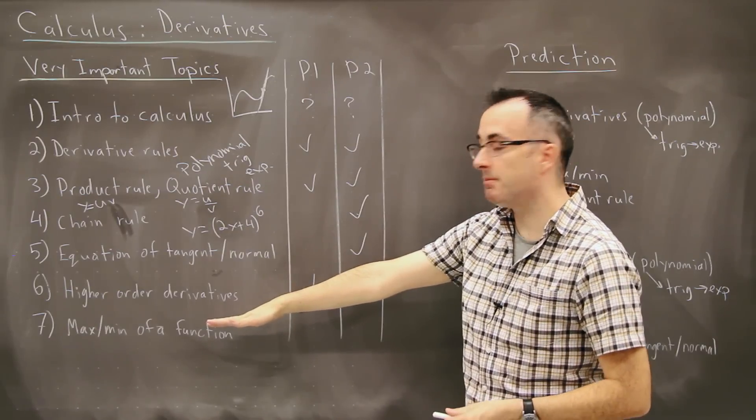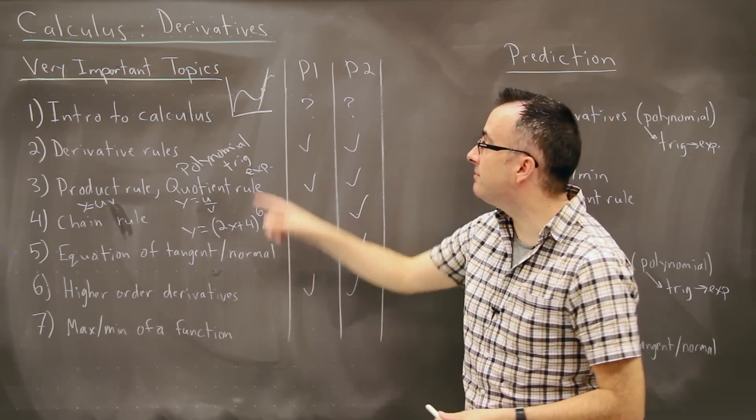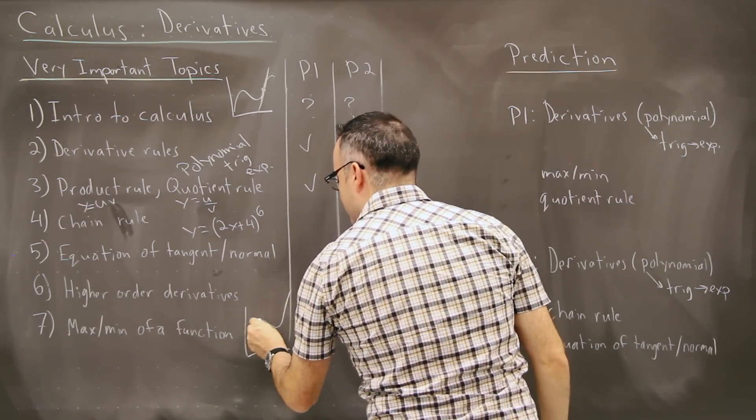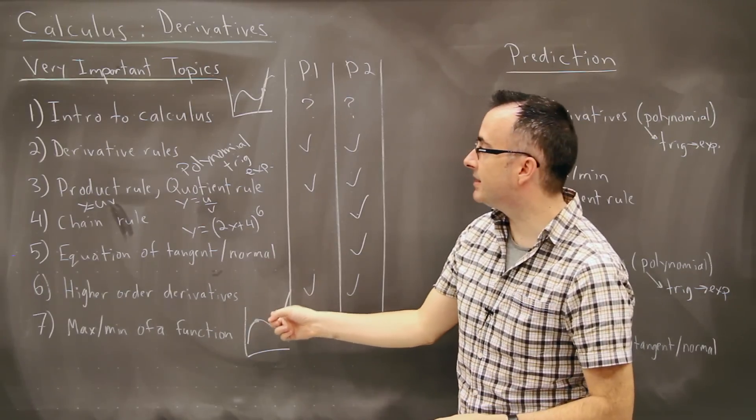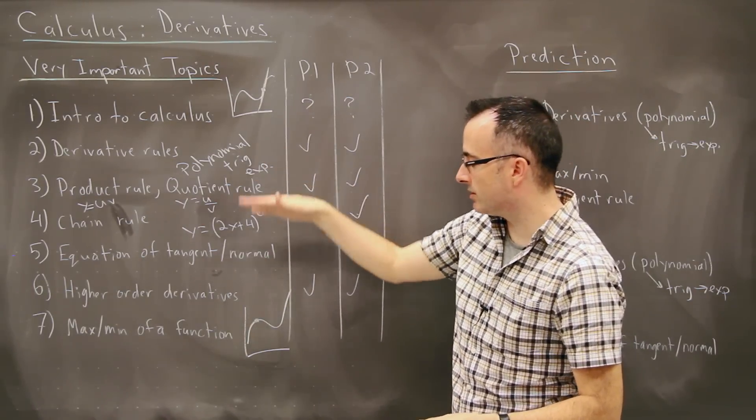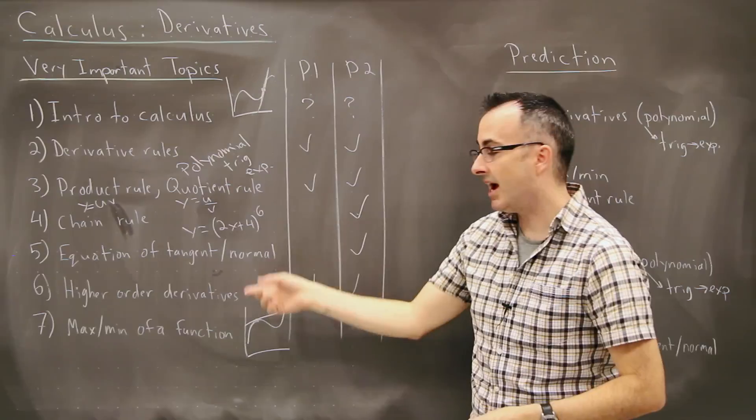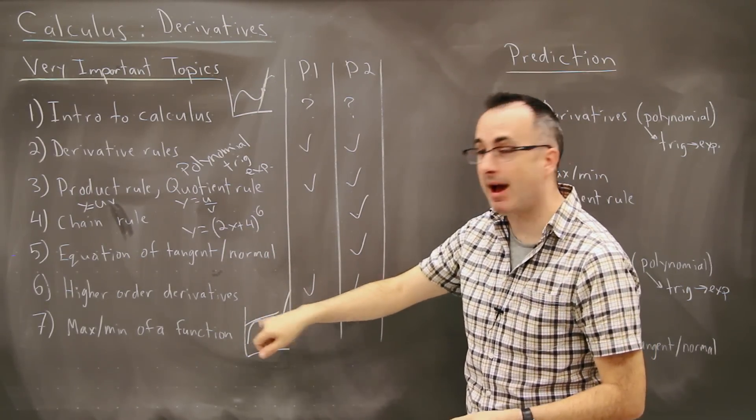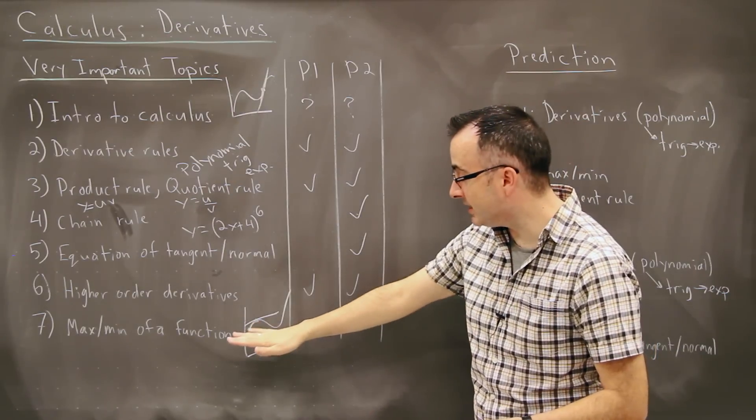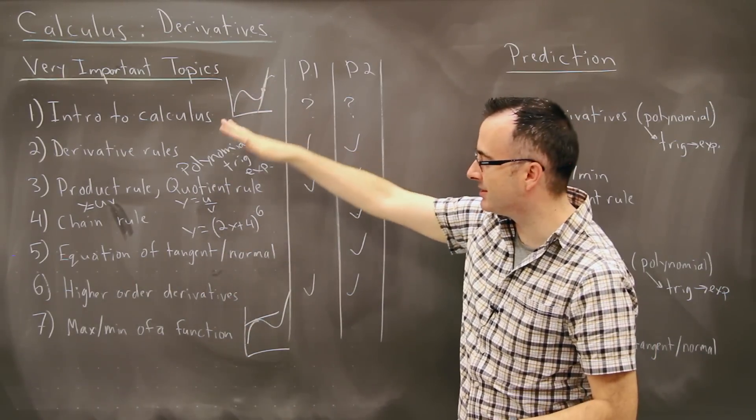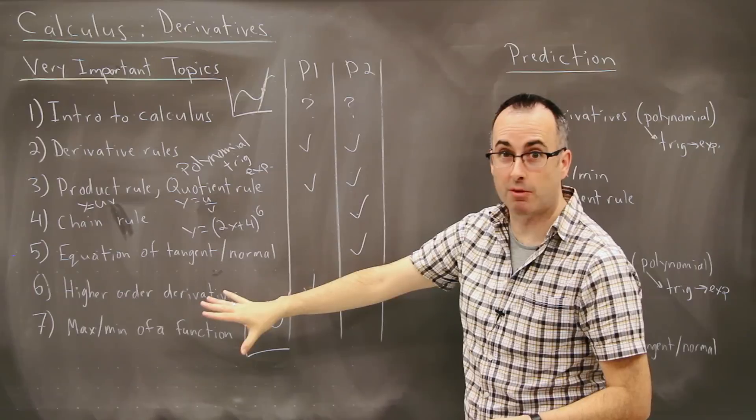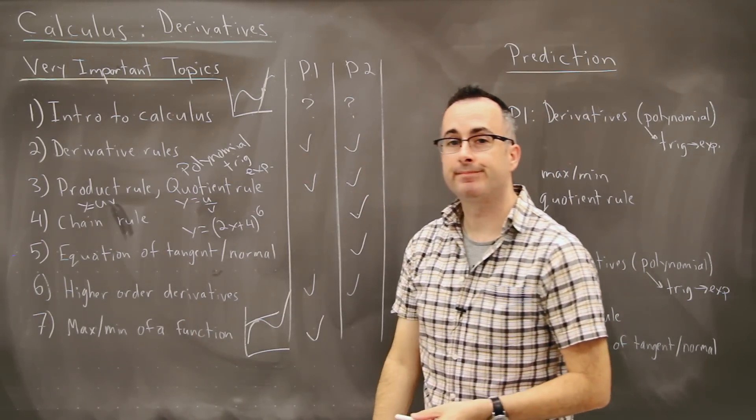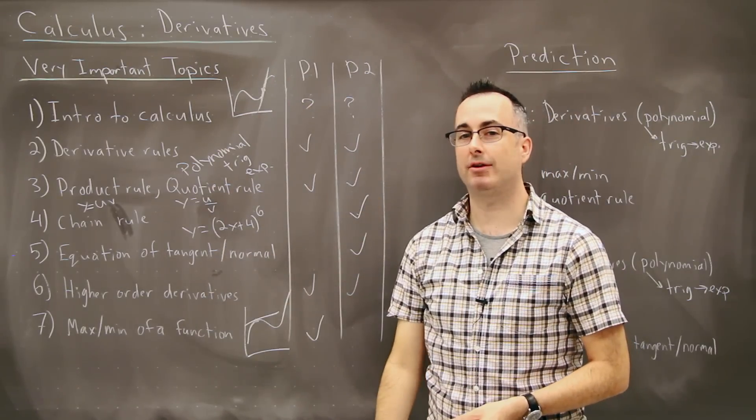And finally we have maximum and minimum of a function. So how do you actually find, let's say you're given some sort of graph. Maybe it goes like this. How do you find this local maximum here? Well, this trick is, first of all, set the derivative equal to zero. Because you know your slope of your tangent is going to be zero. And then we learn some tricks about what to do with the first derivative or the second derivative in order to tell if it's a max or a min. This can be really easy as long as you know some tricks that I show you. And this one here is mainly paper one.